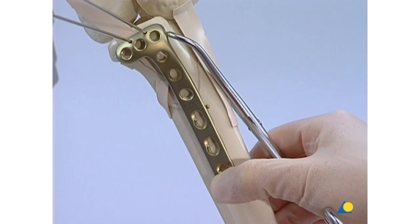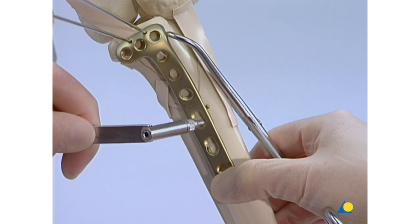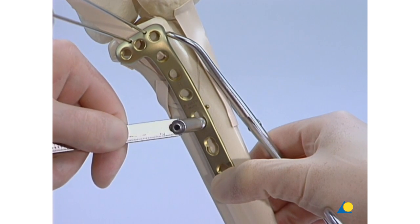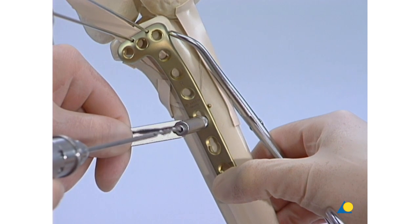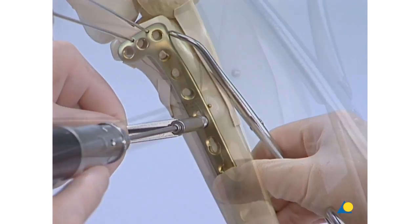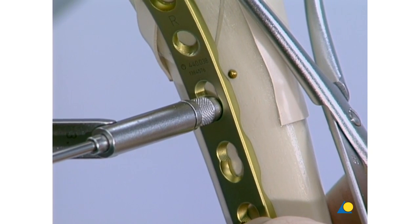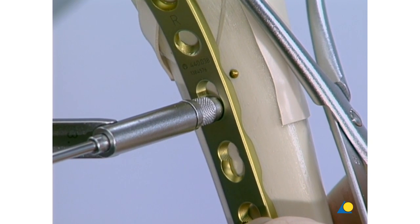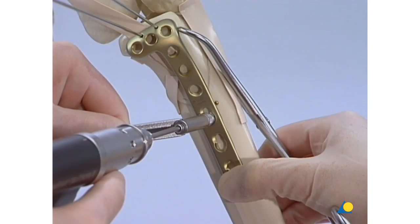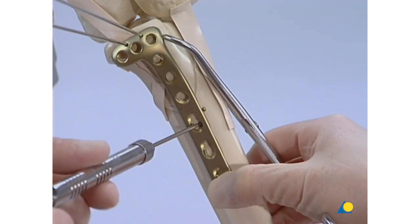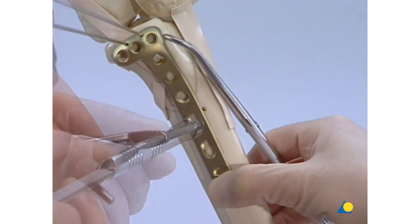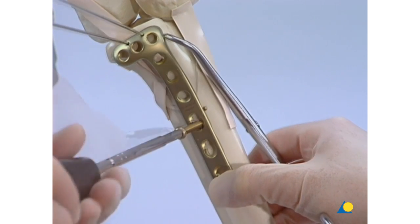The first screw is inserted through the plate hole, just distal to the apex of the fracture. The 4.5-3.2 universal drill guide is used in the neutral position. Both cortices are drilled through using the 3.2 millimeter drill. After measuring and tapping, the 4.5 millimeter cortex screw is inserted.